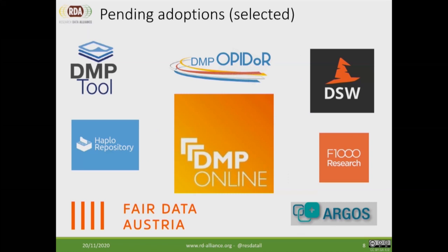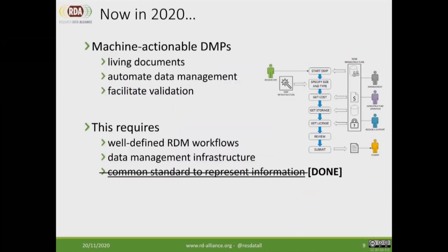DMP Online and the whole family of products based on DMP Roadmap — such as DMP2 and DMP OPIDoR — are currently adopting the recommendation. Others are also implementing it, and I think that was the spirit of why the DCC decided to help establish the group: it's not only a recommendation for DMP Online but for the whole community. Out of the three things we needed to implement, we've now done the common standard to represent information. The future should focus on the other two: workflows and infrastructure.